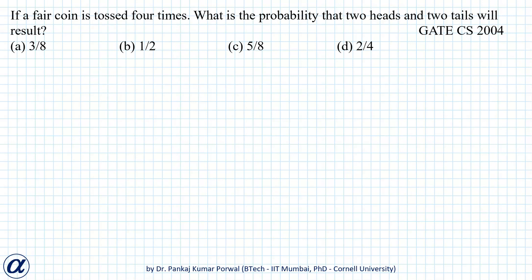In this question, a fair coin is tossed four times and we want to find the probability that two heads and two tails will result. This is a binomial probability problem with total number of trials equal to four. The event of getting two heads and two tails is the same as getting exactly two heads out of four tosses, with the remaining two tosses being tails.